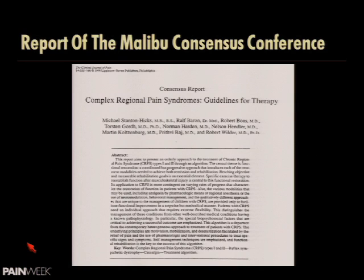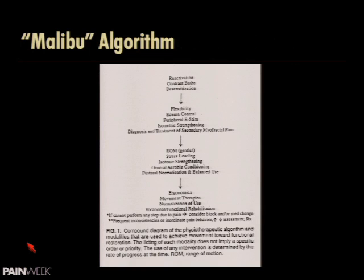There's a lot of literature about treatment algorithms. This functional restoration algorithm starts with gentle stuff, then stress loading — a critical treatment — getting all the way through to vocational and functional rehabilitation as the ultimate expression of functional restoration. We call it the Malibu algorithm because they locked us all in a room in Malibu until we came up with a treatment algorithm. The last night everyone was slamming drinks, and the next morning, with all the egos hungover, Angela Malice the physiatrist and I got it done.